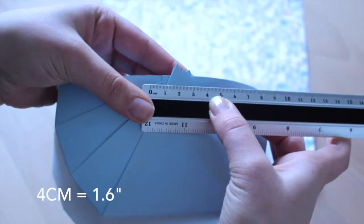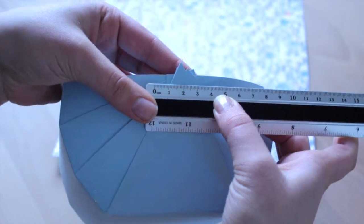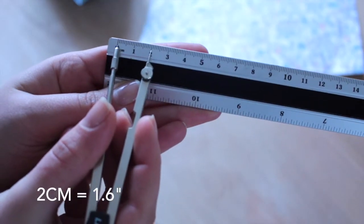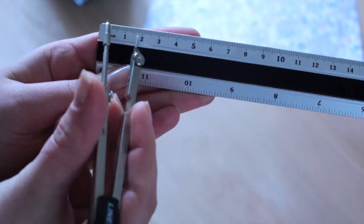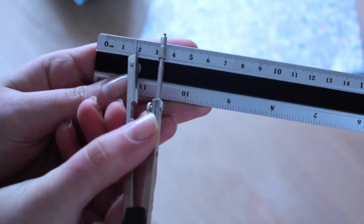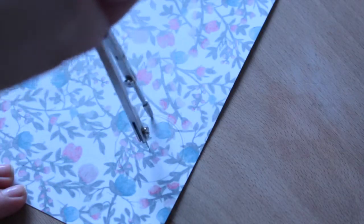The final piece will hide the gatherings and will measure 4 centimeters. Take your compass and find the radius which is 2 centimeters. Then make two nice circles and cut them out.